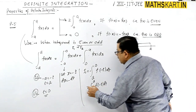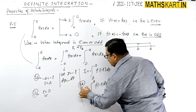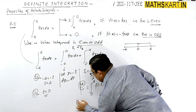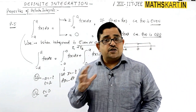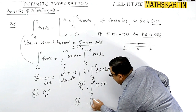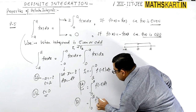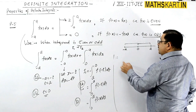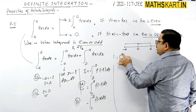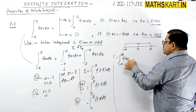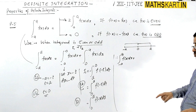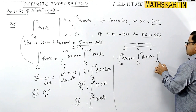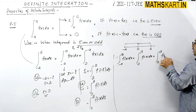Using Property 2 and then applying Property 1 — by the change of variable, the value does not change — so I1 becomes the integral from 0 to a of f(minus x) dx. Therefore, the ultimate value of the integral from minus a to a of f(x) dx equals the integral from 0 to a of f(minus x) dx plus I2, which is the integral from 0 to a of f(x) dx.